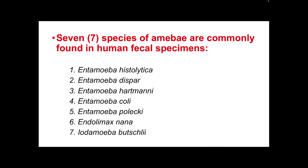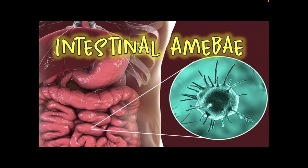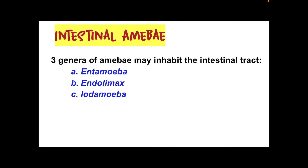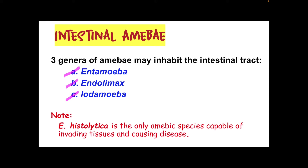These are the seven species of amoeba commonly found in human fecal samples. Out of seven, Entamoeba histolytica is the only pathogenic one that causes disease. For intestinal amoeba, we have three genera: Entamoeba, Endolimax, and Iodamoeba. E. histolytica is the only amoebic species capable of invading tissues and causing disease — the rest are commensals or non-pathogenic.